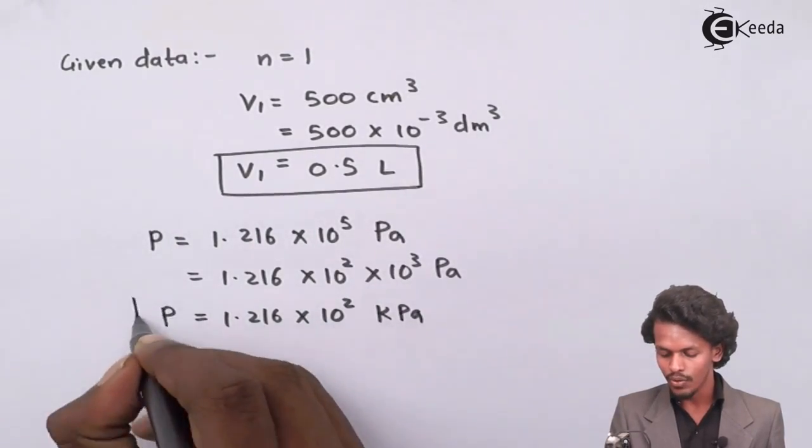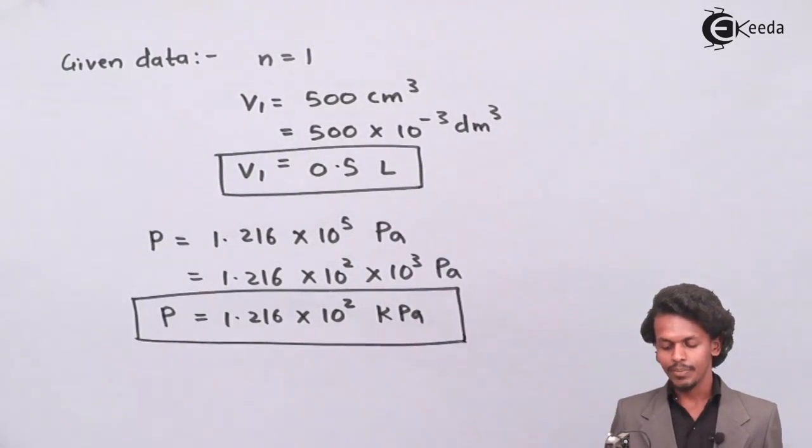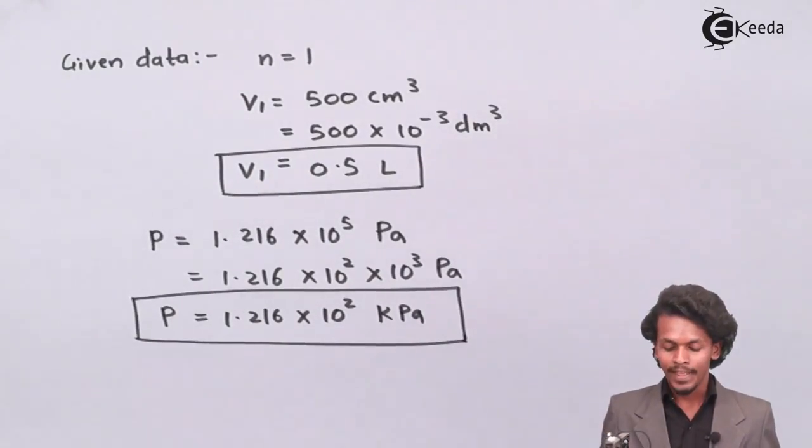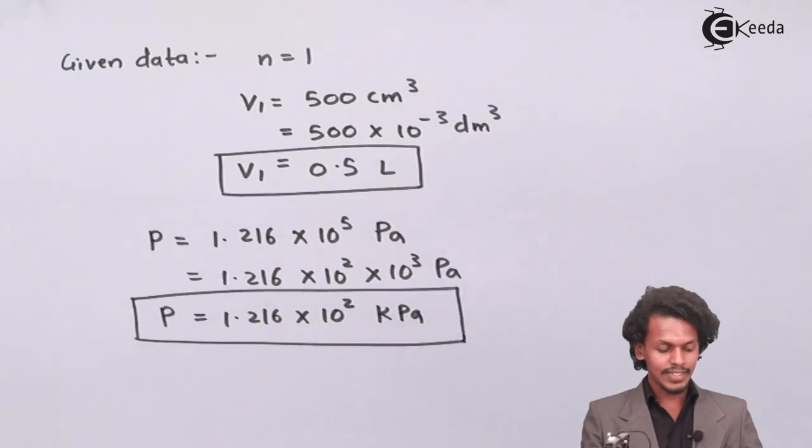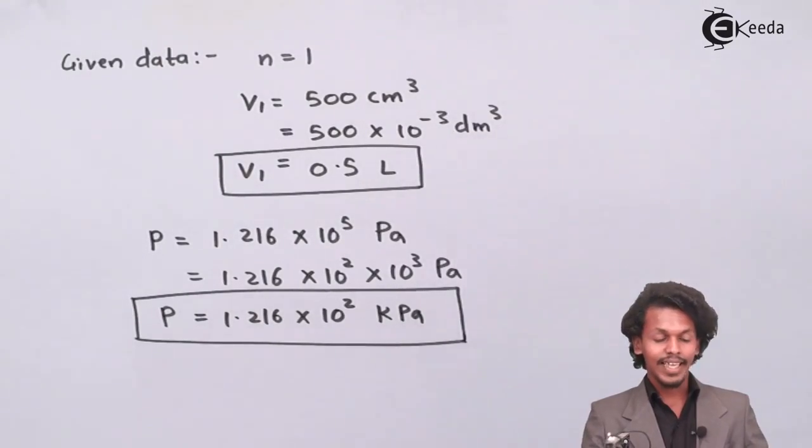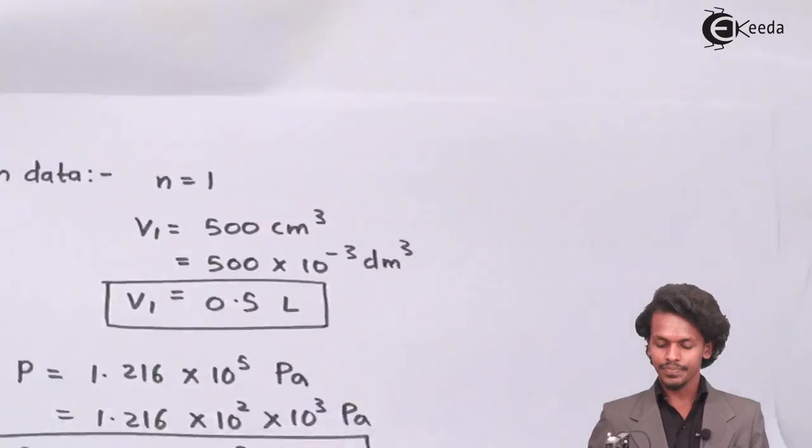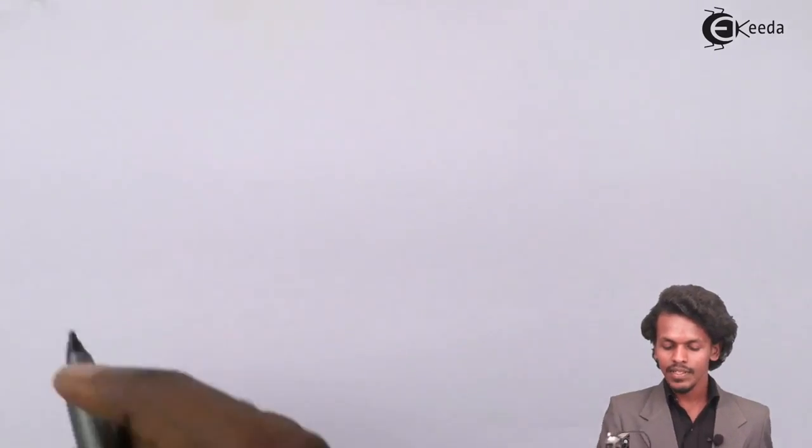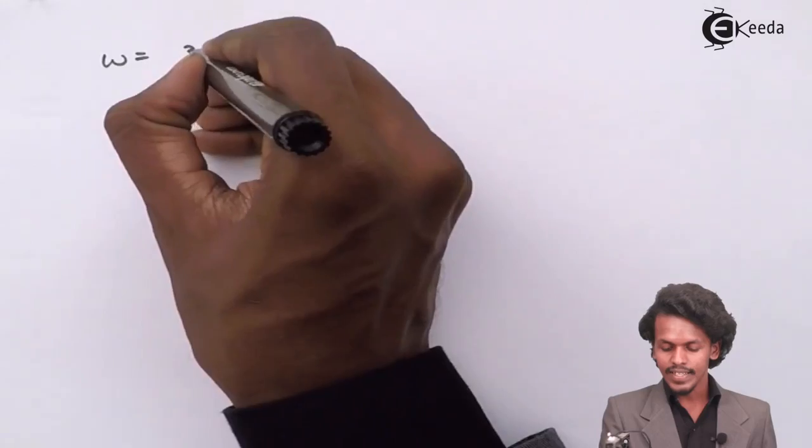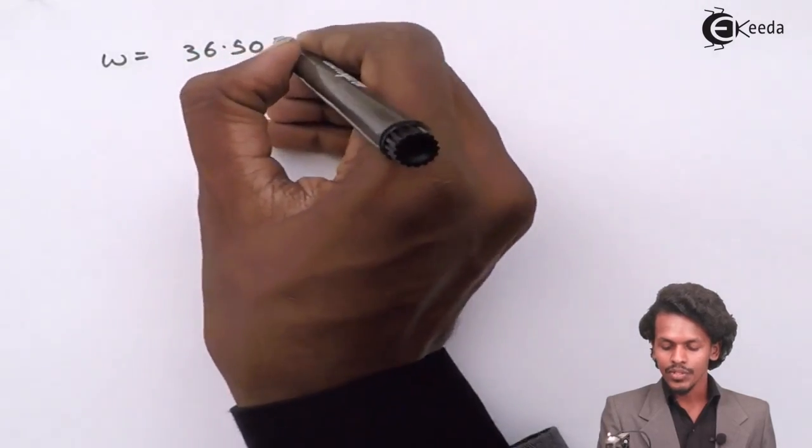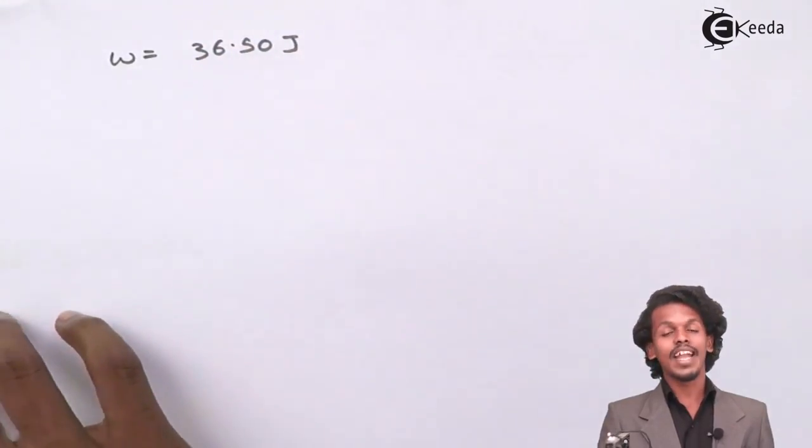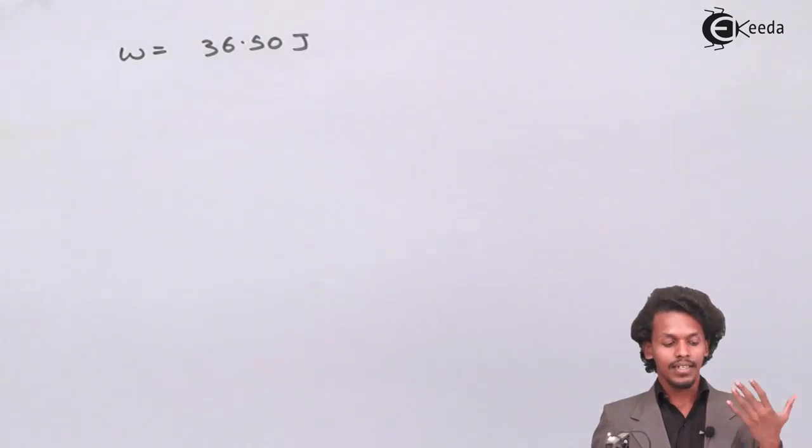This is the value of the pressure that I have evaluated in this form. The next thing that they have given us is the work done in this process, which is found to be 36.50 joules. On that basis we have to calculate what would be the final volume of the particular gas.